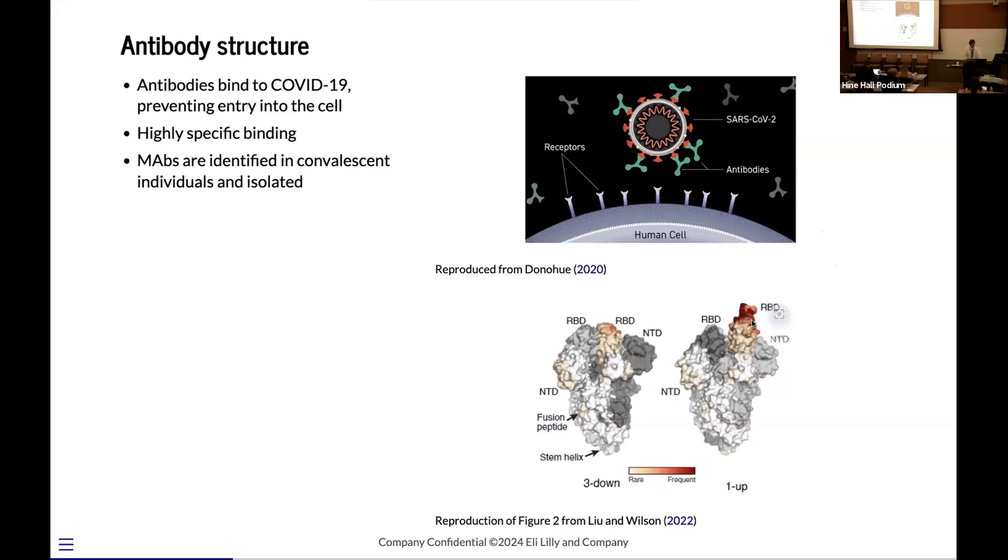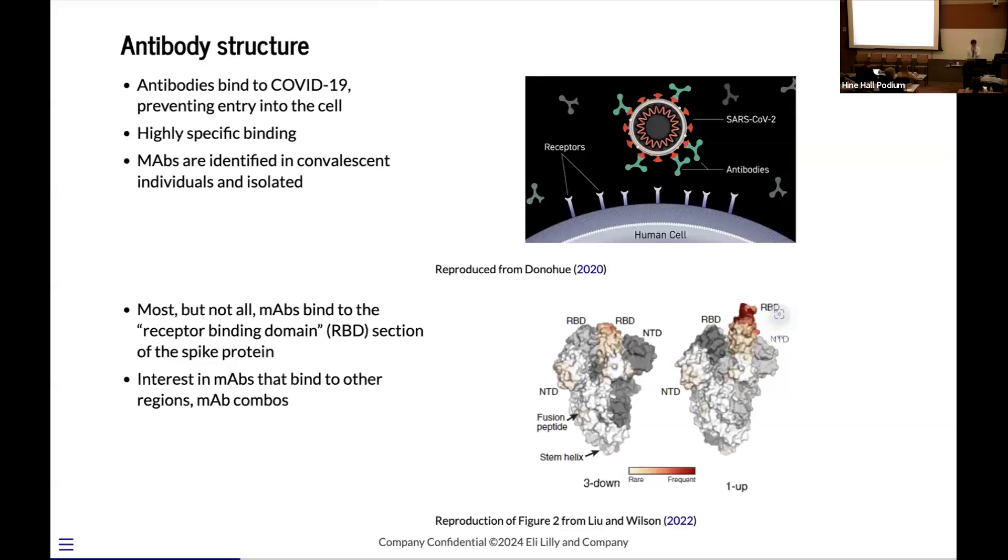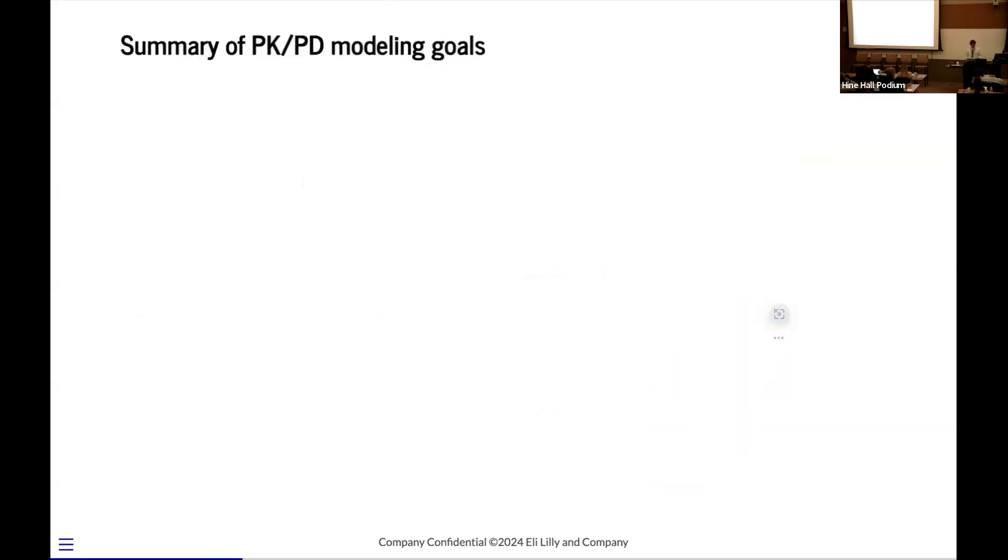This here is a diagram of the spike protein of COVID-19, and colored in is the specific regions that antibodies tend to bind to the spike protein. You can see they tend almost exclusively to bind to this receptor binding domain here, which unfortunately is one of the regions that mutates quite frequently, quite quickly, in no small part because there is so much immune pressure for it to mutate. However, not all antibodies do bind to this part. And so there is interest in antibodies that bind to other areas that don't mutate quite as rapidly, or else finding combinations of antibodies that are going to bind to multiple places.